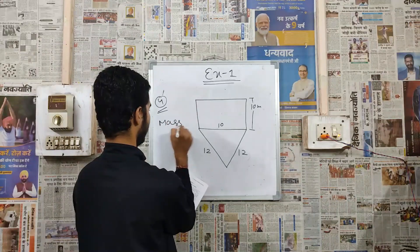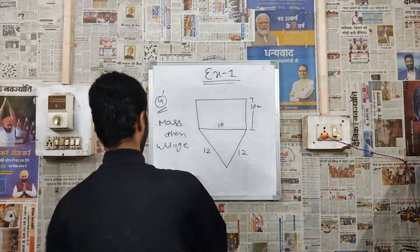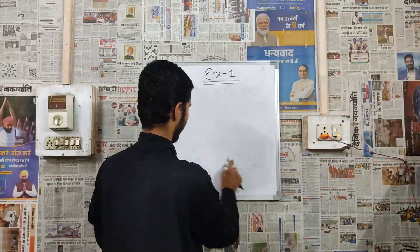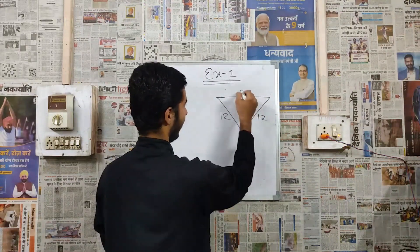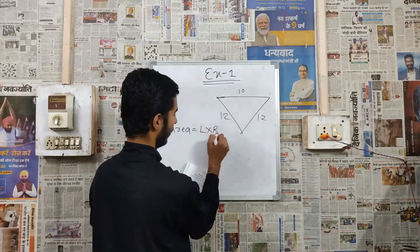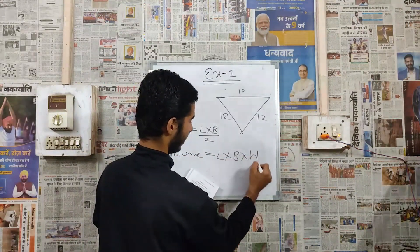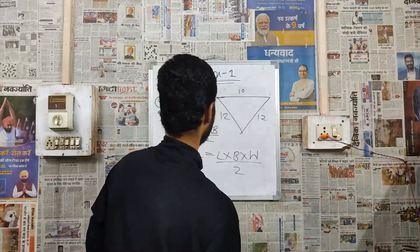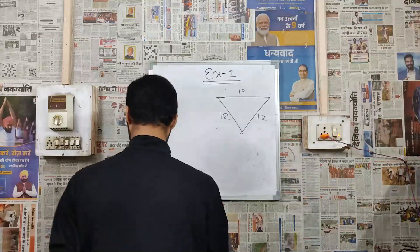To find the ullage, first we have to find mass, then ullage. To find the mass we have to find its volume. Let me draw the triangle again. We know the sides are 12, 12, and 10. Volume is L into B into H divided by 2. We know the length and breadth of the triangle, but we need the height. To find the height we use the Pythagorean theorem.